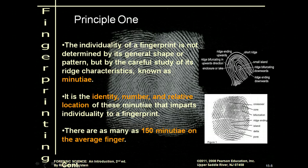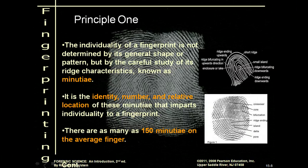The individuality of a fingerprint is not determined by its general shape or pattern, but by careful study of its ridge characteristics — this is called minutiae. Those tiny little areas are what actually give a fingerprint its individual characteristics. The identity, number, and relative location of these minutiae are what makes a fingerprint individual. You might have 150 different characteristics on a single finger — like a crossover, an island, or a delta — and all of those cause that fingerprint to be individualized.